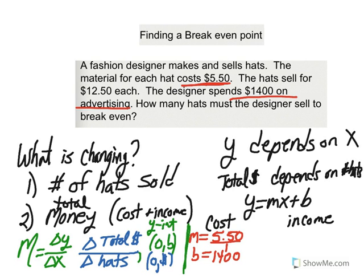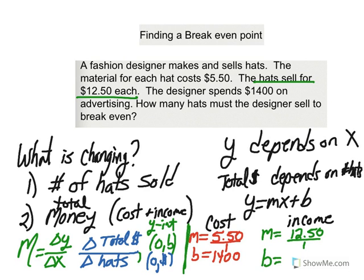Now let's take a look at income. For income, the hats each sell for $12.50, and we don't start making any money until we sell the hats. So M for income is $12.50 per hat sold — that is our slope. In terms of B, if we don't sell any hats, we don't make any money, so the initial starting point when no hats are sold is zero dollars.